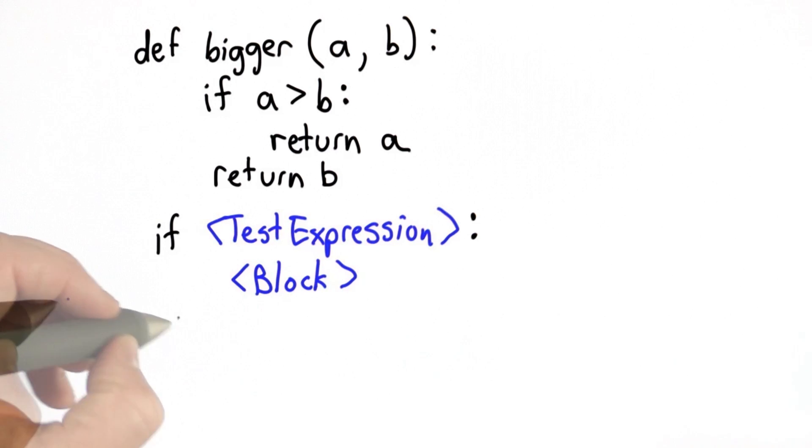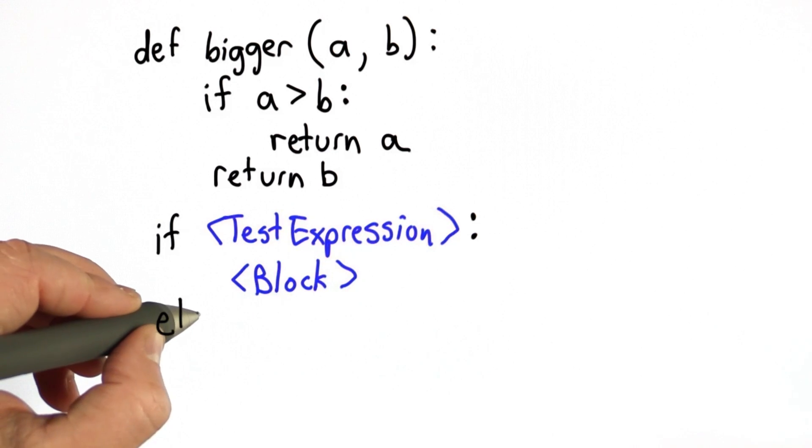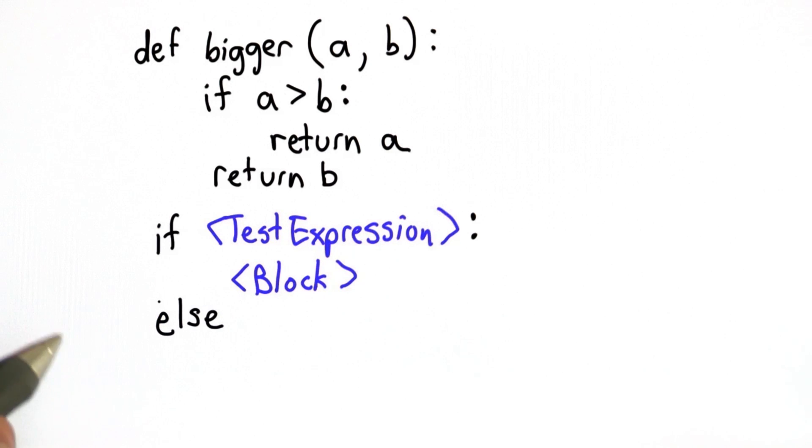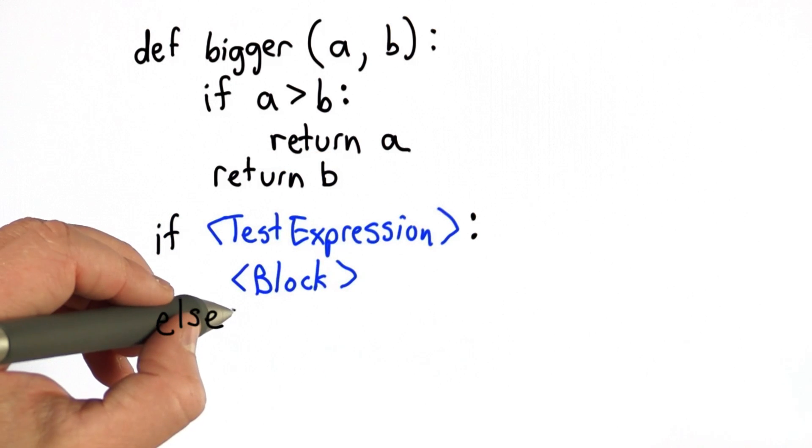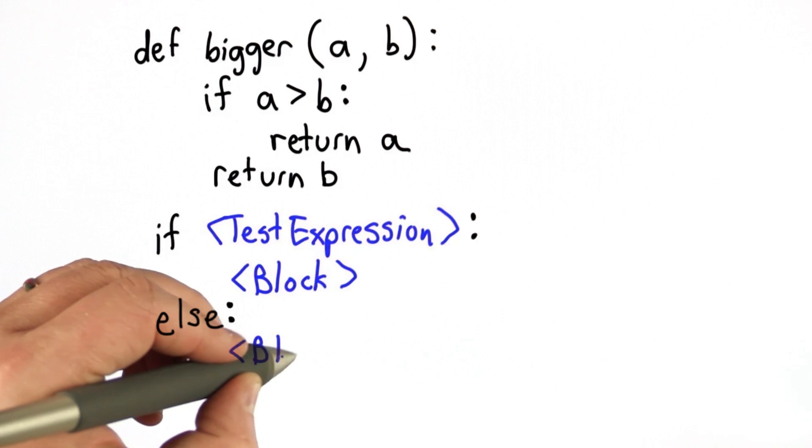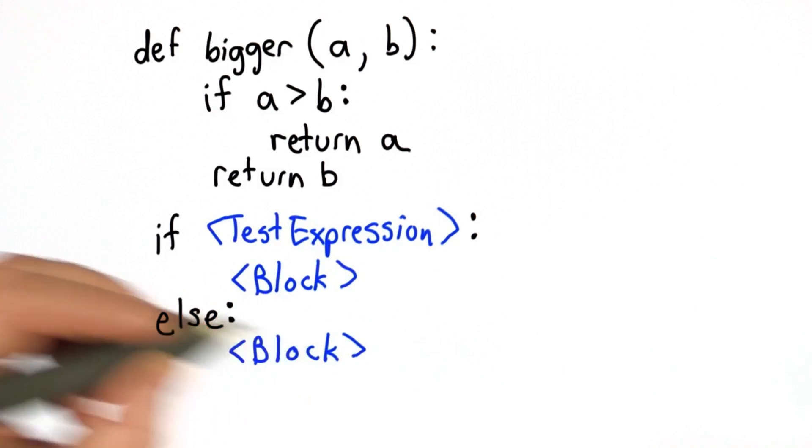And we can do that by using an else. We can have after the if, instead of the next statement, we can have an else that's part of the if. This means if the test expression was true, we're going to execute this block. If it's not true, we're going to execute the other block, which is inside the else.